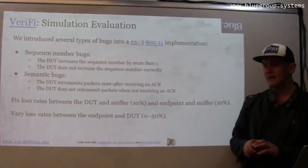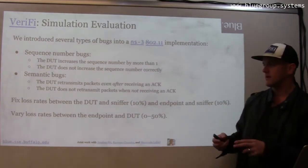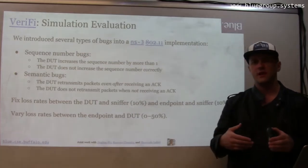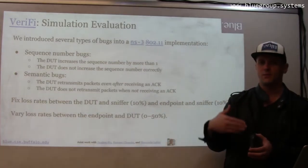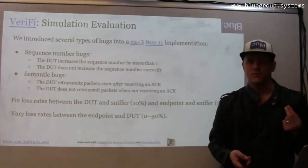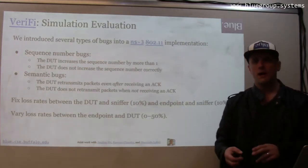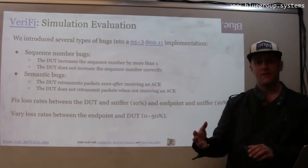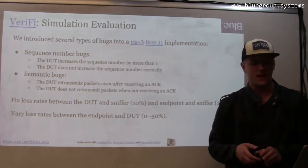The second class of bugs were more semantic bugs, so for example the device under test would retransmit a packet even when it received an ACK, or not retransmit a packet when it didn't receive an ACK. These are bugs that you would hope that a validation approach like this would be able to catch.